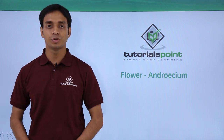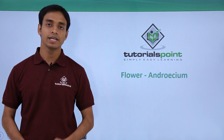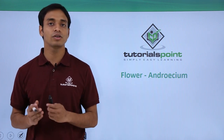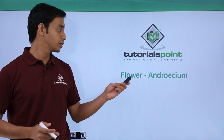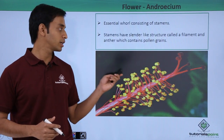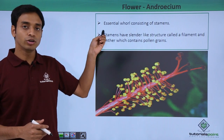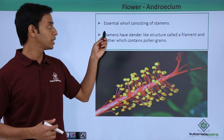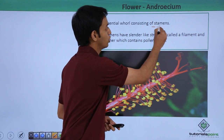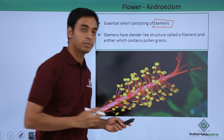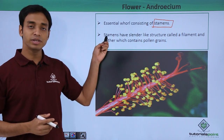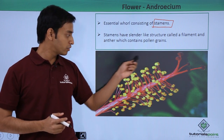Hello everyone, welcome to Tutorials Point. In this video, we will be discussing the first essential whorl of a typical flower, which is the androecium, or the male part of a typical flower. This is an essential whorl of a particular flower which consists of the stamens. Stamens are the male reproductive part of a typical flower.